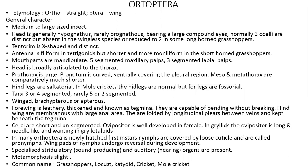General characters of this order: medium to large size insects are present. Head is generally hypognathous — when the mouthparts are directed downwards or at right angles to the body. Rarely prognathous. They have large compound eyes. Normally three ocelli are distinct, but absent in wingless species or reduced to two in some long-horned grasshoppers.